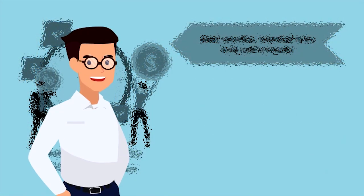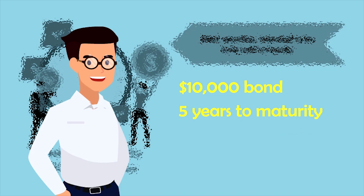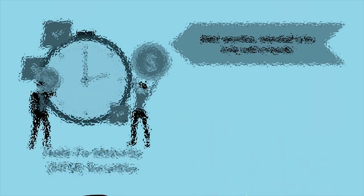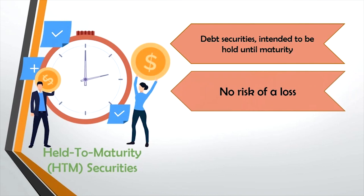Let's say you purchase a $10,000 bond with 5 years remaining until its maturity. You must intend to hold that bond until it matures for it to be considered a held to maturity security. When a bond is held until maturity, the bearer receives the full amount of the investment back — in this case, $10,000. Since the holder does not intend to sell the bond, there is no risk of a loss due to market fluctuations in the price of the bond.